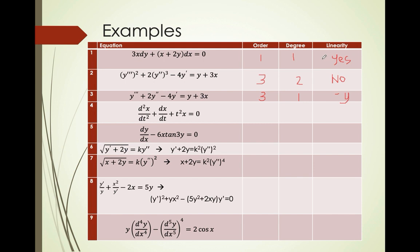Or we can just check: this is 2nd order, 1st degree, and x is the dependent variable — yes. For dy over dx, y is the dependent variable; it contains tangent of 3y, so this is 1st order, 1st degree, and this is not linear.